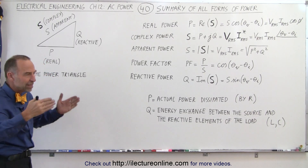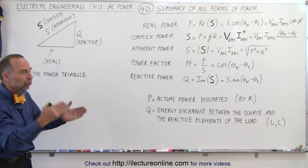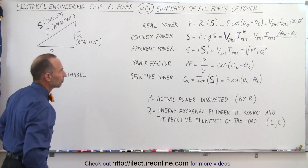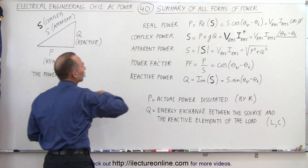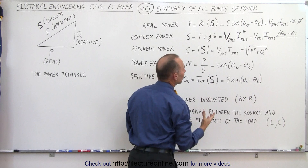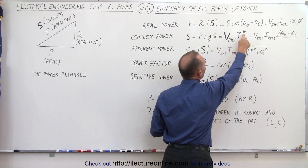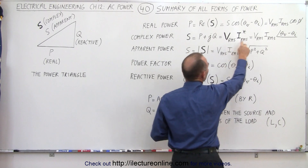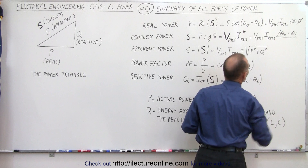The complex power is the phasor format of the apparent power, where apparent power is simply the magnitude of the complex power. So the real power is the power consumed by the resistor. The complex power, defined as the bold-phase S, is the real part plus the imaginary part of the power. We can also find it by multiplying the RMS voltage times the complex conjugate of the RMS current, or in phasor format, the magnitude of the voltage times the magnitude of the current times the cosine of the phase angle.